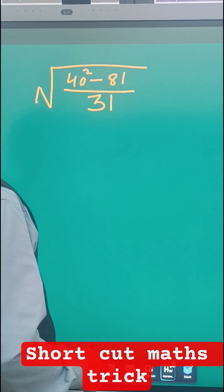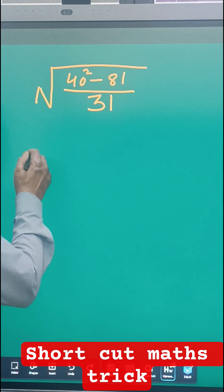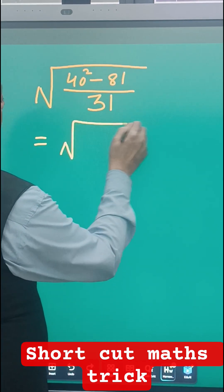Let's solve square root of 40 squared minus 81 upon 31. If you see the number, it looks like a very difficult calculation, but if you just go with some steps here, see how it will go.